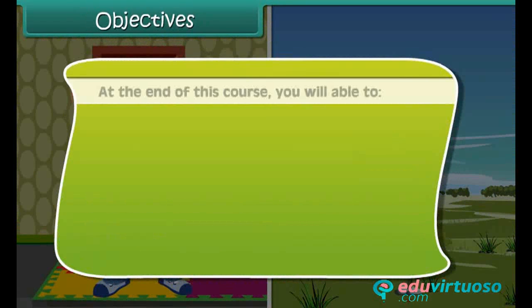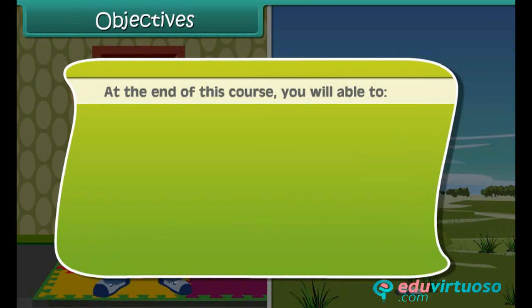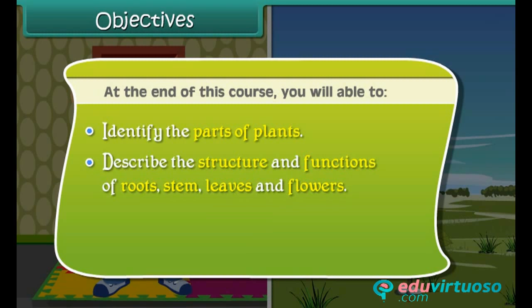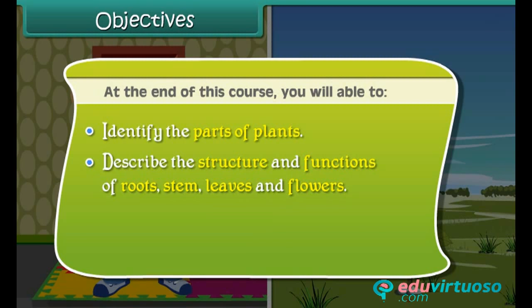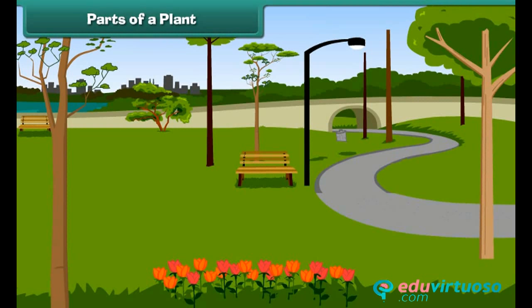Objectives: At the end of this course, you will be able to identify the parts of plants, describe the structure and functions of roots, stem, leaves and flowers, and explain the functions of roots and seeds.